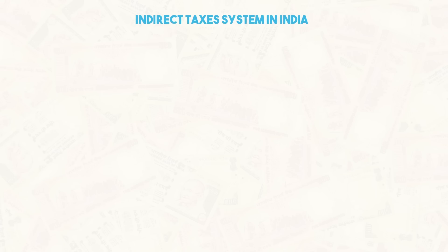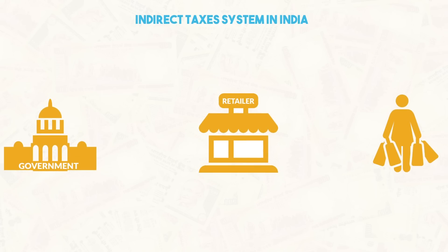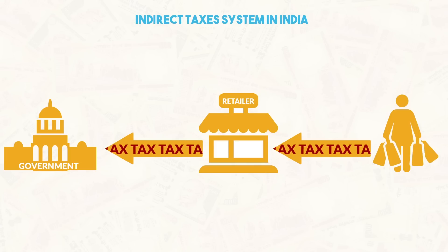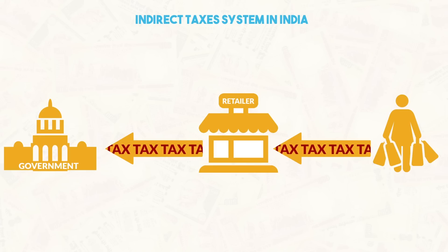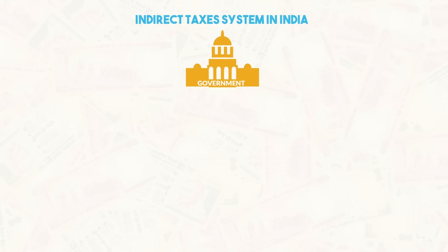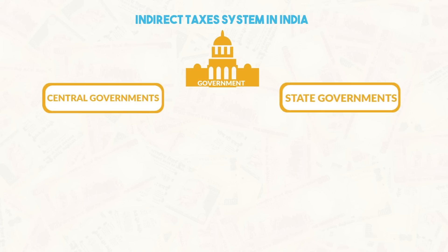What is the indirect taxation system which was prevalent in India? Indirect taxes are those in which the ultimate burden of bearing the tax does not fall on the entity which is responsible for paying the tax — that is, the burden can be shifted. Currently, both the central and the state governments levy indirect taxes on different goods. Central indirect taxes include excise, customs, central sales tax, SENVAT, etc.